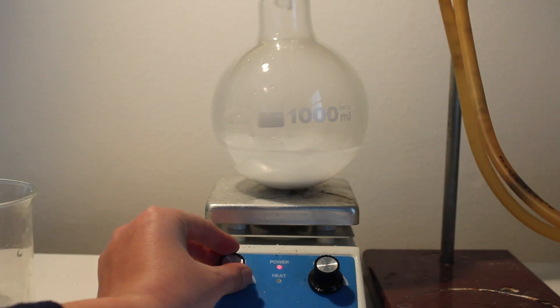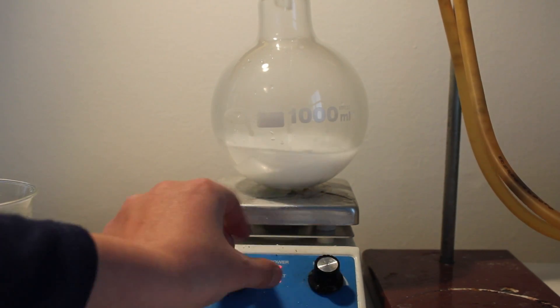Add a stir bar to the flask, start stirring, and turn the hot plate on medium heat.